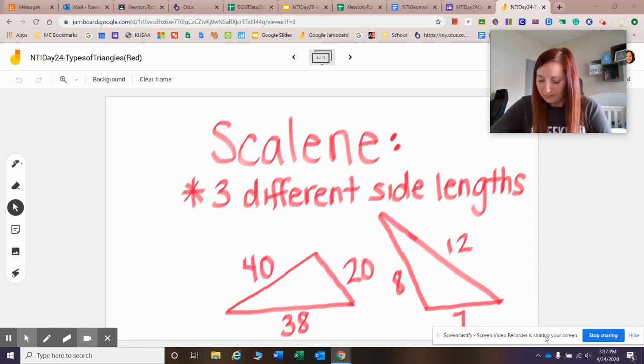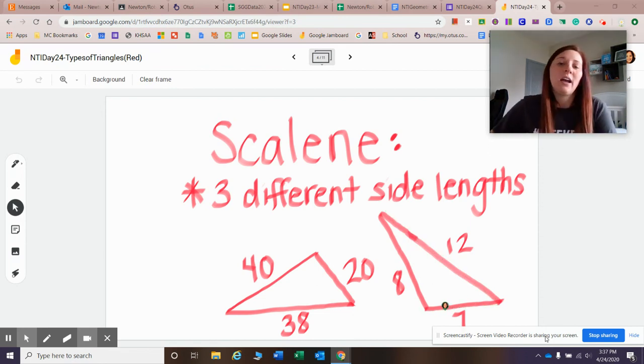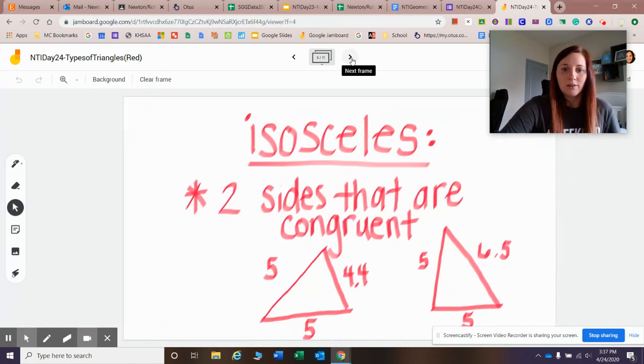So you look here, 8, here's 12, and here's 7. When you get older in high school and in middle school, you'll have to find the missing sides. But for now, what you need to know is that scalene, three different side lengths.